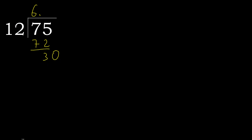12 multiplied by 3 is 36 — 36 is greater. 12 multiplied by 2 is 24 — 24 is not greater. Subtract: 6. Next.